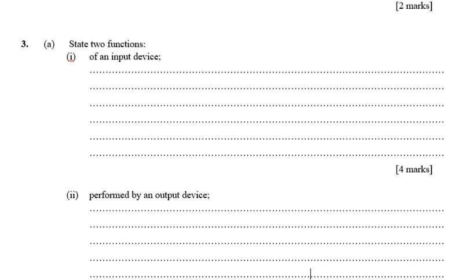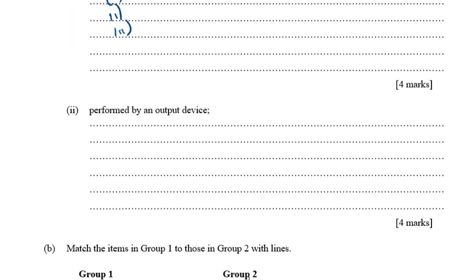Now we need two functions of an input device. One: it gives commands to the computer. Two: it presents the computer with data. Additionally, it converts human language into computer language, because the computer has its own language.